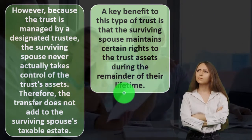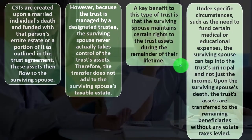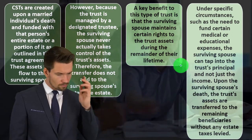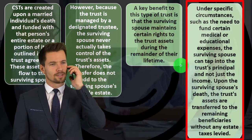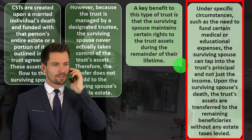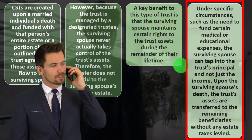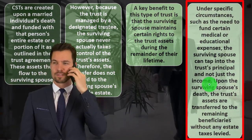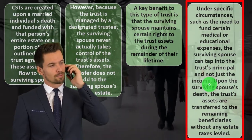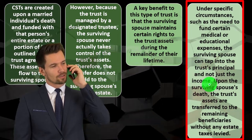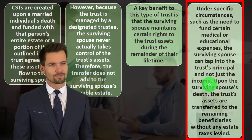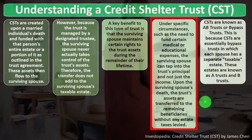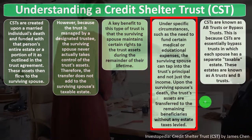A key benefit is that the surviving spouse maintains certain rights to the trust assets during the remainder of their life — ideally retaining as much access as possible while keeping those assets outside the surviving spouse's taxable estate. Under specific circumstances, such as funding certain medical and educational expenses, the surviving spouse can tap into the trust principal and not just the income. Upon the surviving spouse's death, the trust's assets are transferred to the remaining beneficiaries without estate taxes levied.